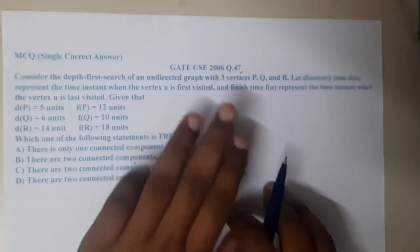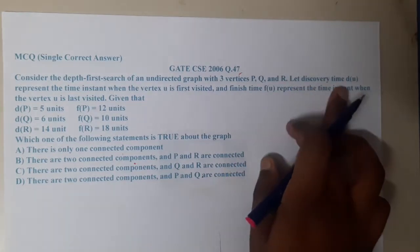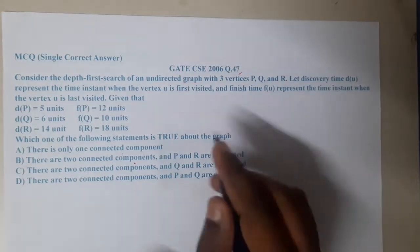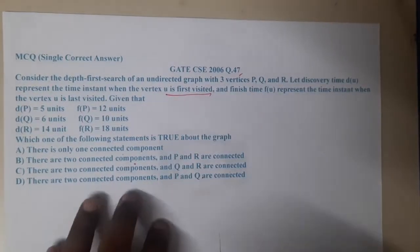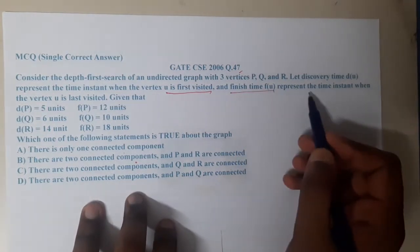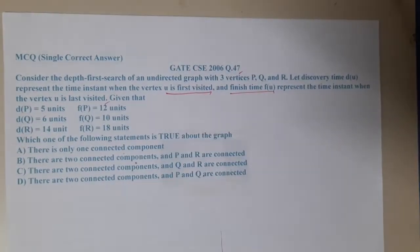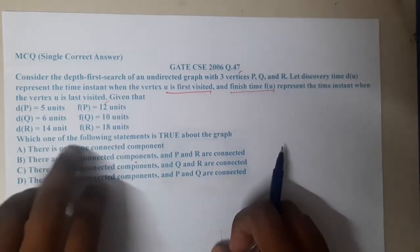Consider the depth-first search of an undirected graph with three vertices P, Q, and R. Let discovery time d(u) represent the time instance when the vertex u is visited first time, and the finish time f(u) represents the time instance when the vertex is visited last time.